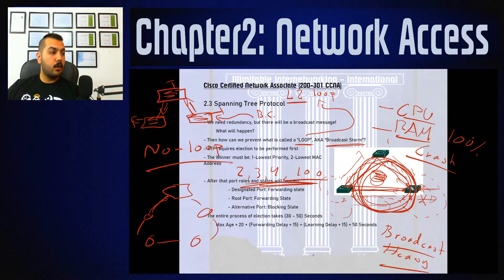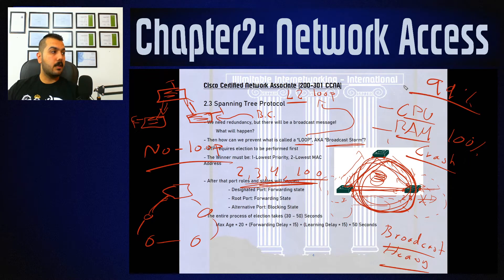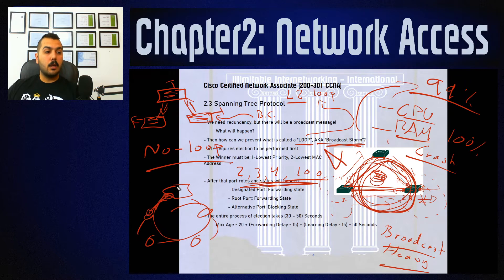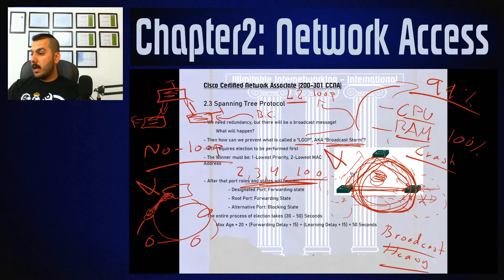Once you close your ring — whether the enclosed area is a triangle, square, pentagon, or any shape — you have a 99% chance of experiencing a broadcast storm. This makes redundancy a failure, ring topologies a failure, and all these networking technologies seemingly useless.